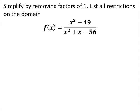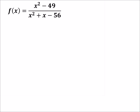So we'll factor everything out, and then we'll list all the restrictions on the domain. I'm going to factor, let's just focus on the numerator first, and then the denominator. That way we don't have to get things mixed up.